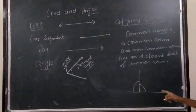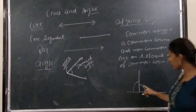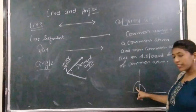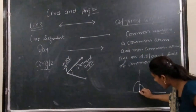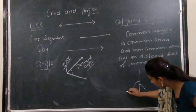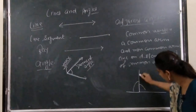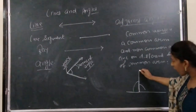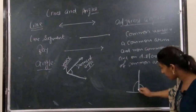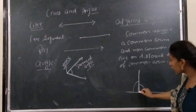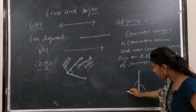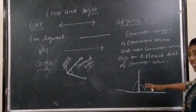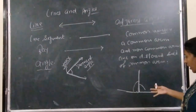In the diagram, two angles are formed and both angles are adjacent to each other. Why? Because they have a common vertex, one common arm, and the two non-common arms lie on different sides of the common arm — one on this side and the second on this side.